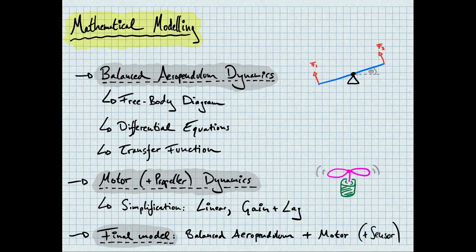However, this is not the whole story. To provide the forces that drive the system, we require actuators, or in our case, motors with propellers. The dynamics of these actuators also need to be taken into account. Finally, we'll combine the previously mentioned models with sensor and DAC approximations to arrive at the overall model of our system.